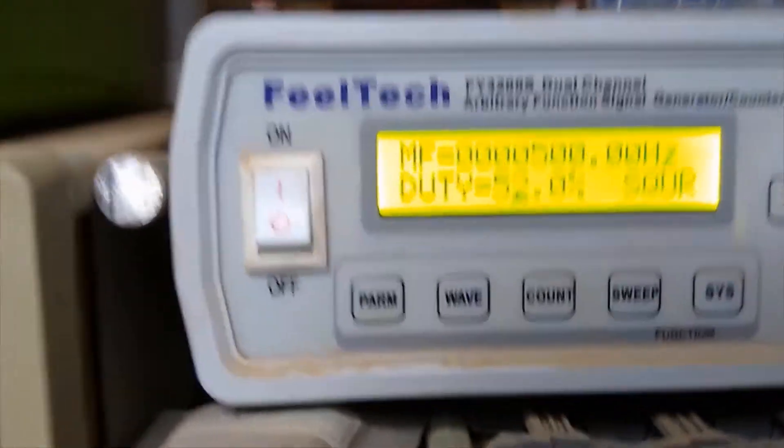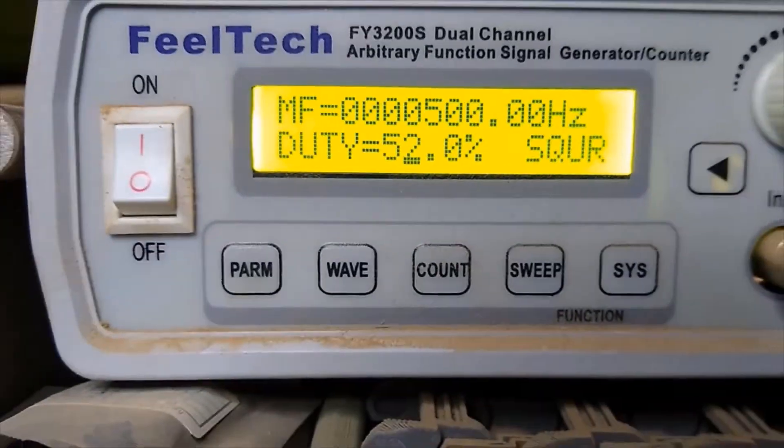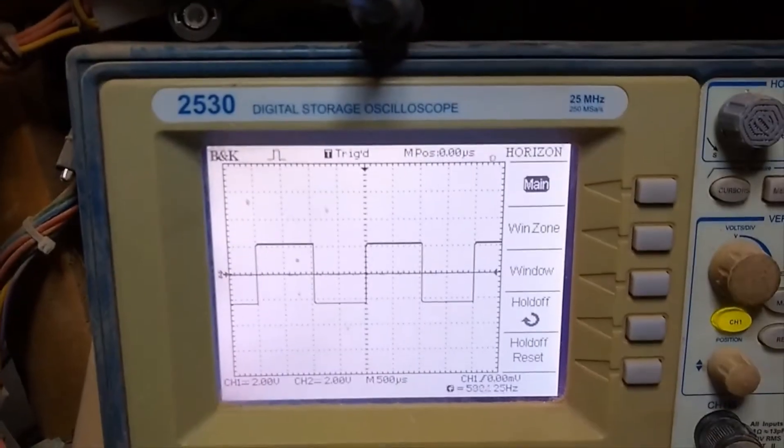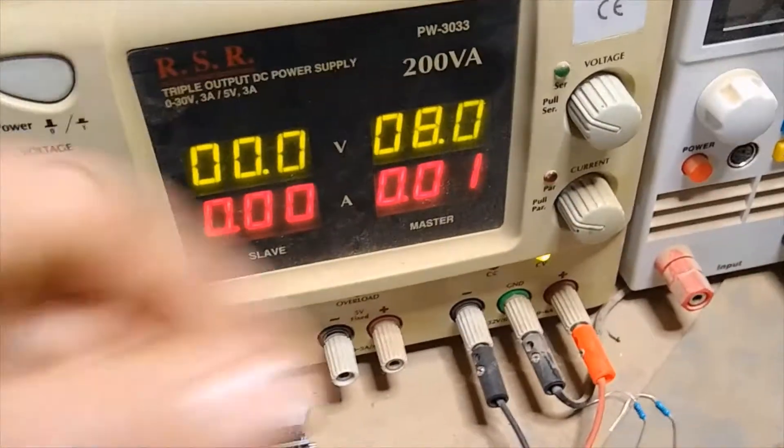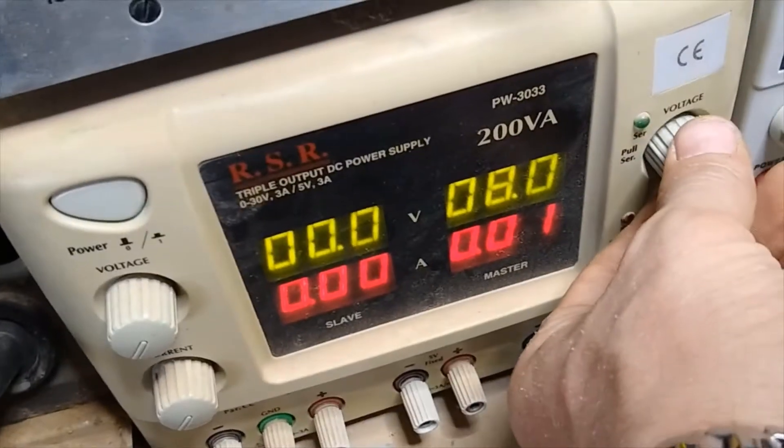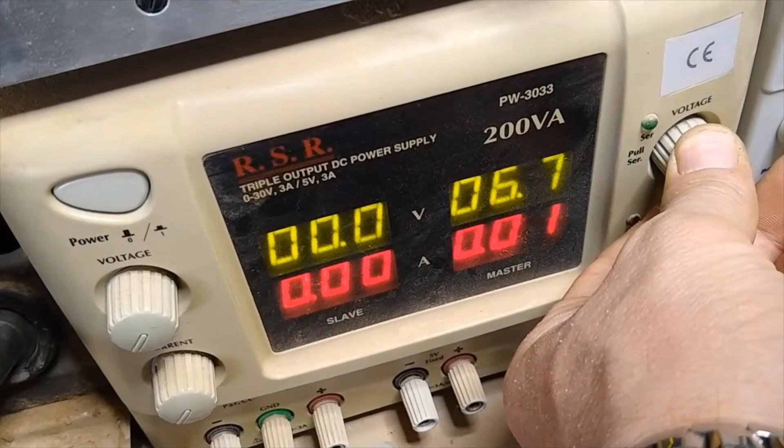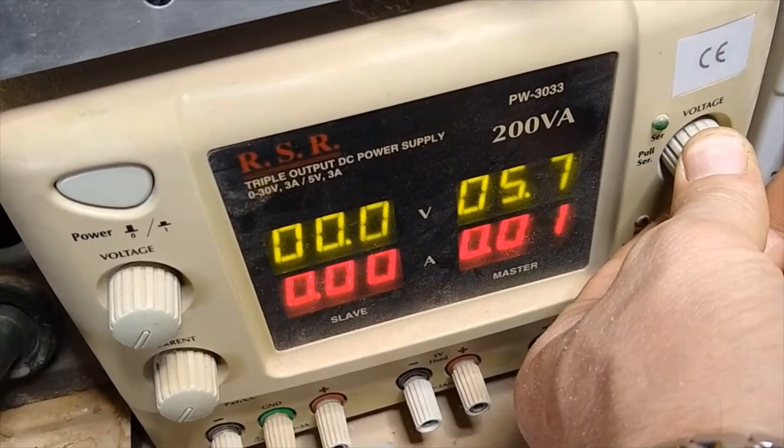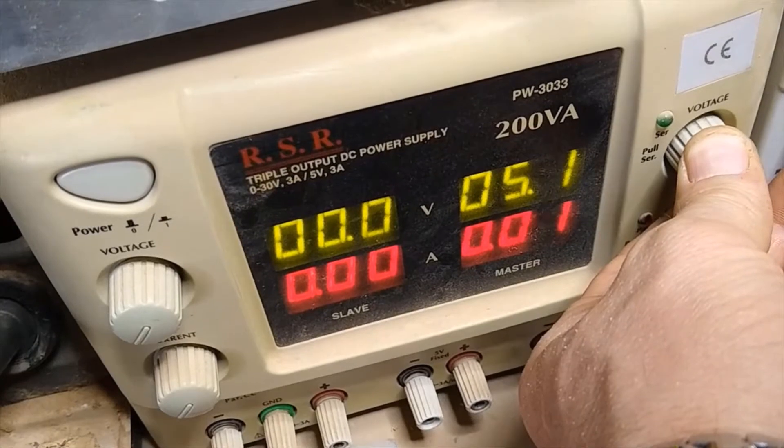So anyway, you can see right now I'm running a 52 percent duty cycle and that's what that looks like there. And 8 volts here, let's drop it down to the 5 that the Arduino runs at and I'll show you what happens.